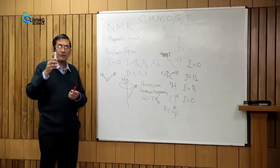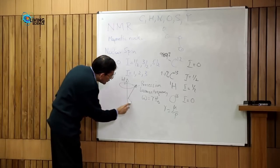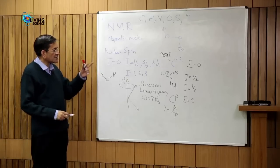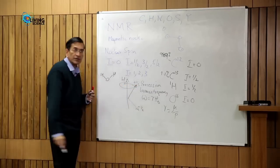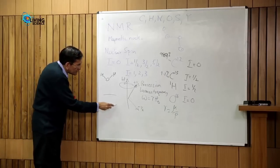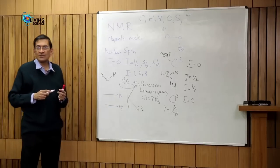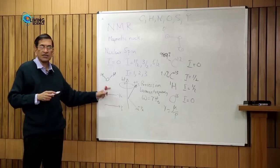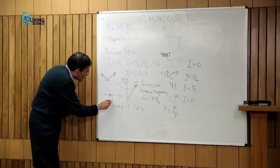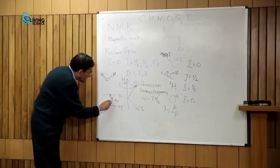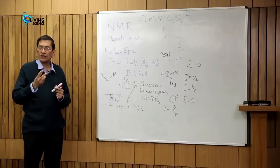A magnet can align with the field or against the field, giving two possible orientations. For a spin of one-half, this is the plus-half orientation and the minus-half orientation. You will have two energy levels, each associated with one orientation. You can apply the condition that if the energy difference is related to the frequency of radiation that you shine on it, you can cause a transition.